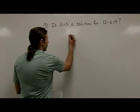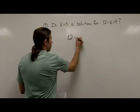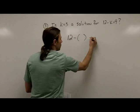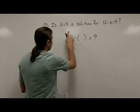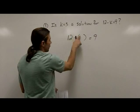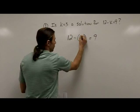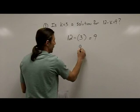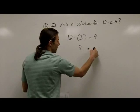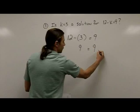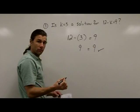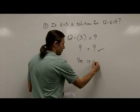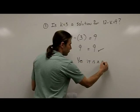I'm going to take my equation. Where there was a variable k, I'm going to put an open set of parentheses, equals 9. Now I'm just going to plug in the value for k, which is 3. When I take 12 minus 3, I get 9 on the left side. We already have 9 on the right side, so that solution checks. Yes, it is a solution.